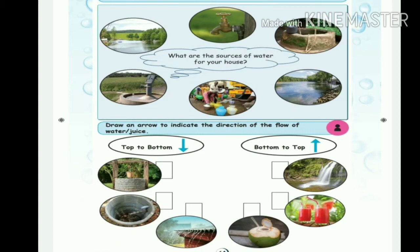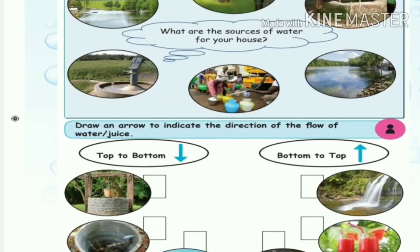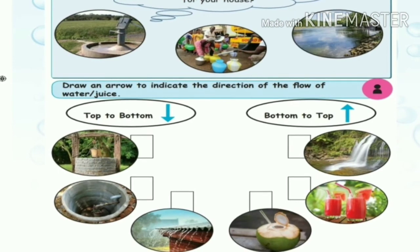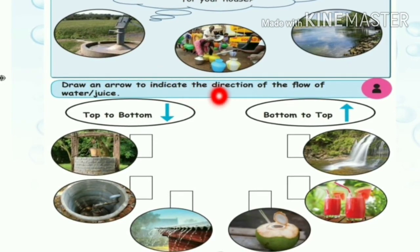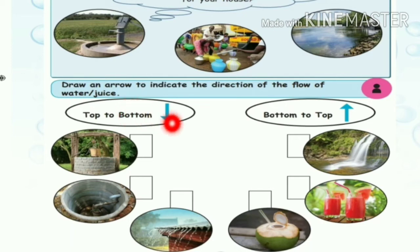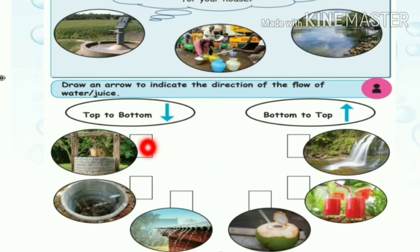Next: draw an arrow to indicate the direction of the flow of water. First in your area — top to bottom. How do you do top to bottom in your area? First: rain.